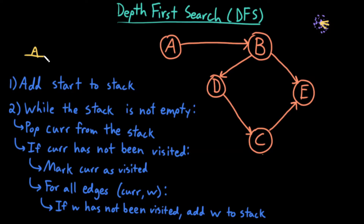While the stack is not empty, pop the current node from the stack. So I pop the current node — my current node is A. If my current node has not been visited, mark it as visited. Then for each of its outgoing edges, if its outgoing neighbor has not been visited, add it to the stack. A has one edge, that neighbor is B. B has not been visited, so I add it to the top of my stack.